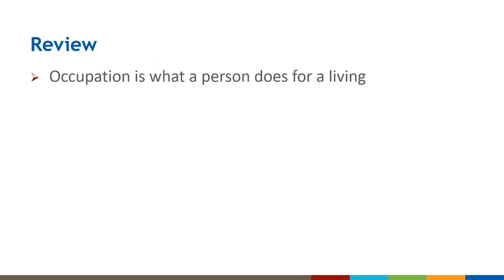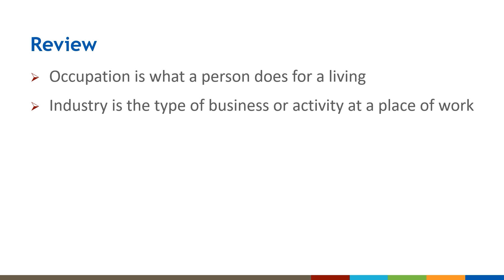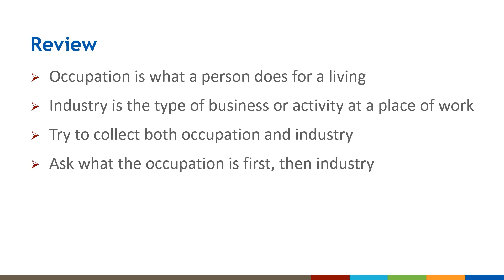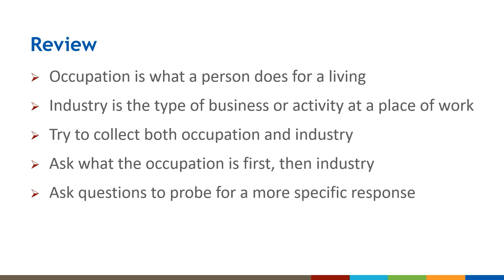Let's review. Occupation is what a person does for a living. Industry is the type of business or activity at their place of work. Do your best to collect both occupation and industry so that we can better understand what the person does. It is important to ask the person what their occupation is first, because people are more familiar with explaining occupation than the industry where they work. Be sure to ask probing questions to get more specific responses.